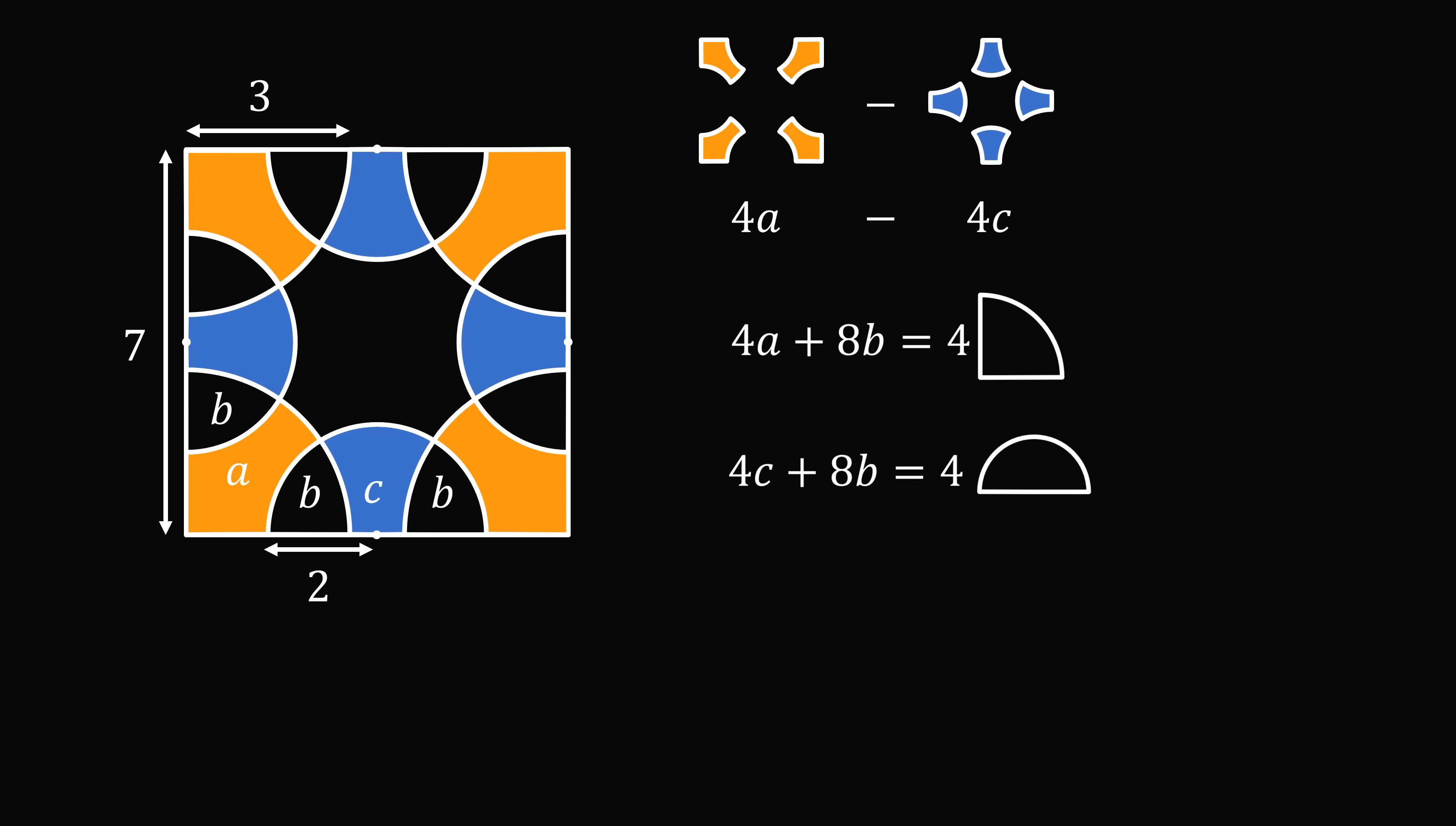All we have to do now is subtract the second equation from the first, and the b terms will cancel out. So, we have 4a minus 4c is equal to 4 times the area of a quarter circle, minus 4 times the area of a semicircle. Each of these areas can be easily calculated.